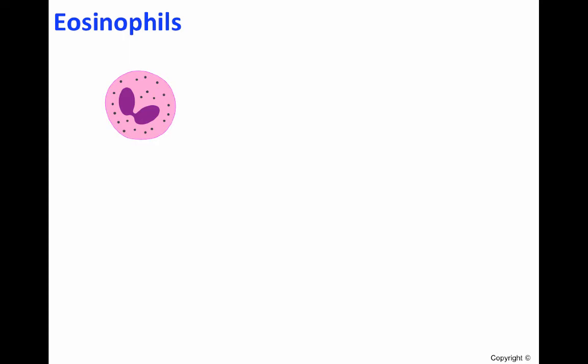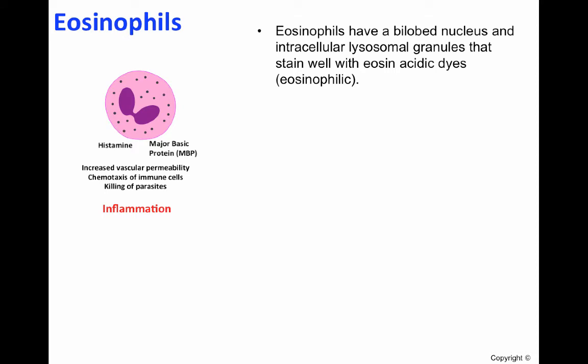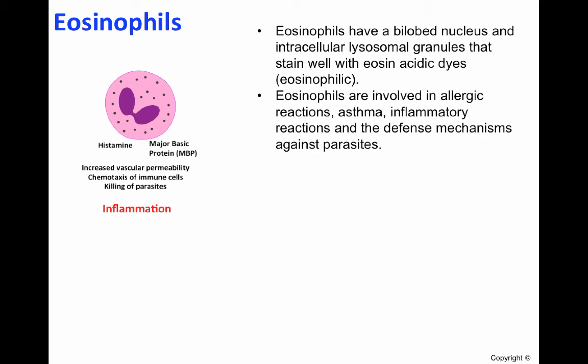Eosinophils also participate in inflammation. Two of the main factors released by eosinophils are histamine and major basic protein, or MBP. These molecules will lead to increased vascular permeability, chemotaxis of immune cells, and killing of parasites, all of which are characterized by inflammation. Eosinophils have a bilobed nucleus and intracellular lysosomal granules that stain well with eosinophilic dyes. They will be seen as pink or eosinophilic on the image. Eosinophils are involved in allergic reactions, asthma, inflammatory reactions, and the defense mechanisms against parasites.